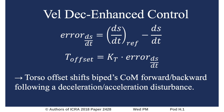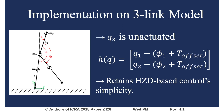A torso offset proportional to the error acts to shift the biped's center of mass in response to a disturbance. Using a three-link model, the torso offset is layered on the output of a conventional HCD-based controller to retain simplicity of implementation for higher dimensional systems.